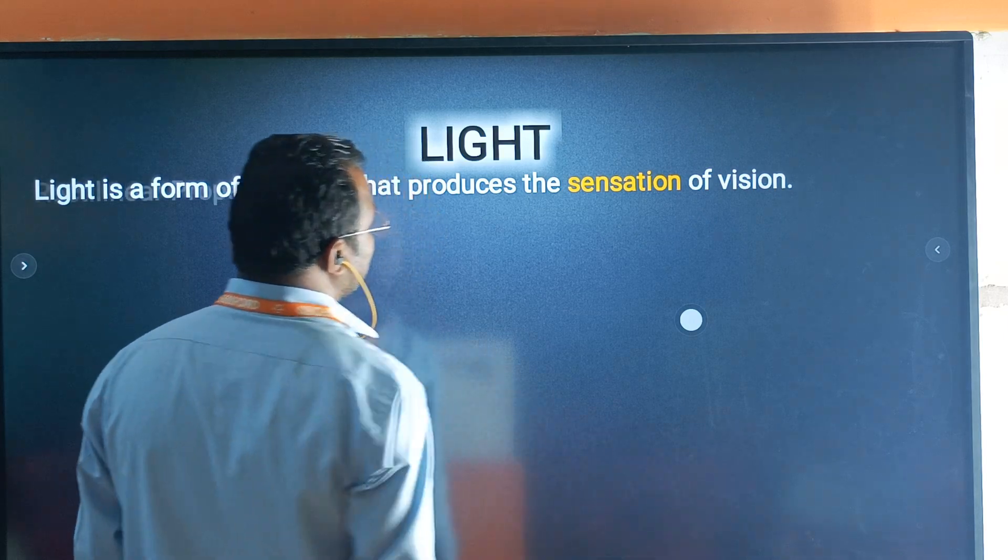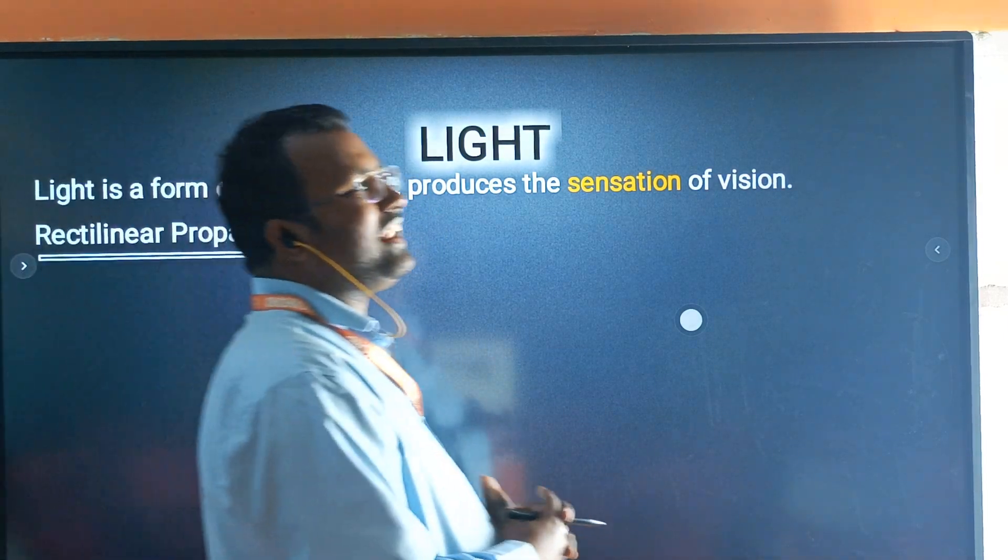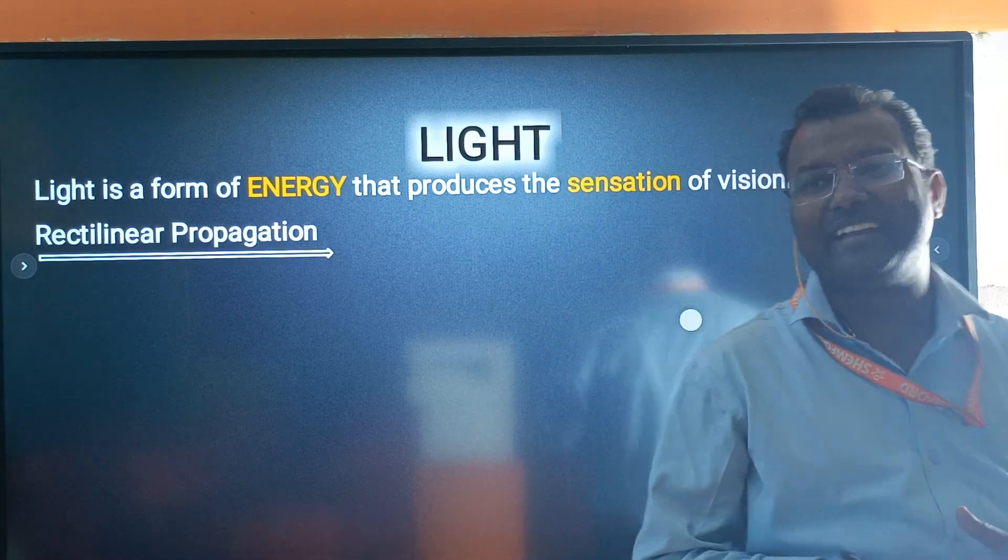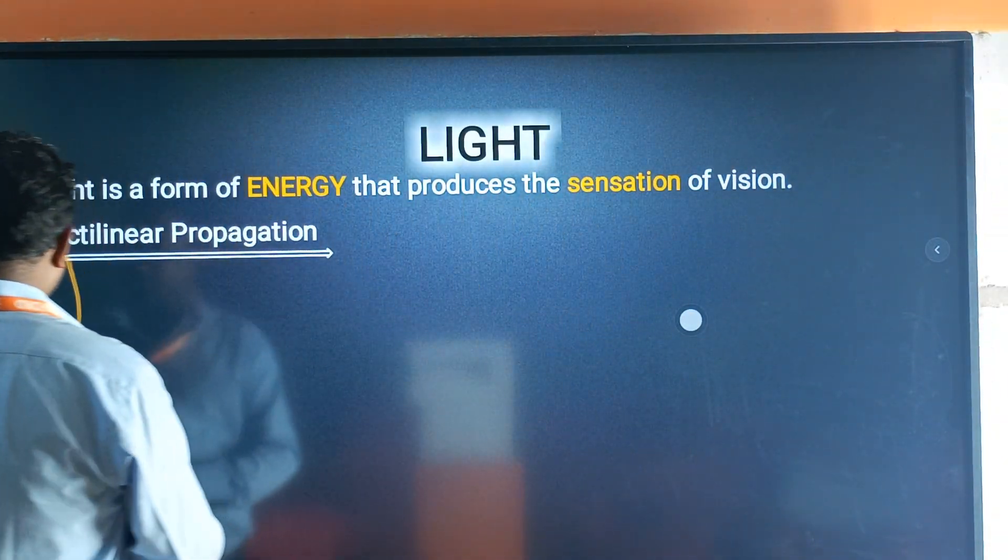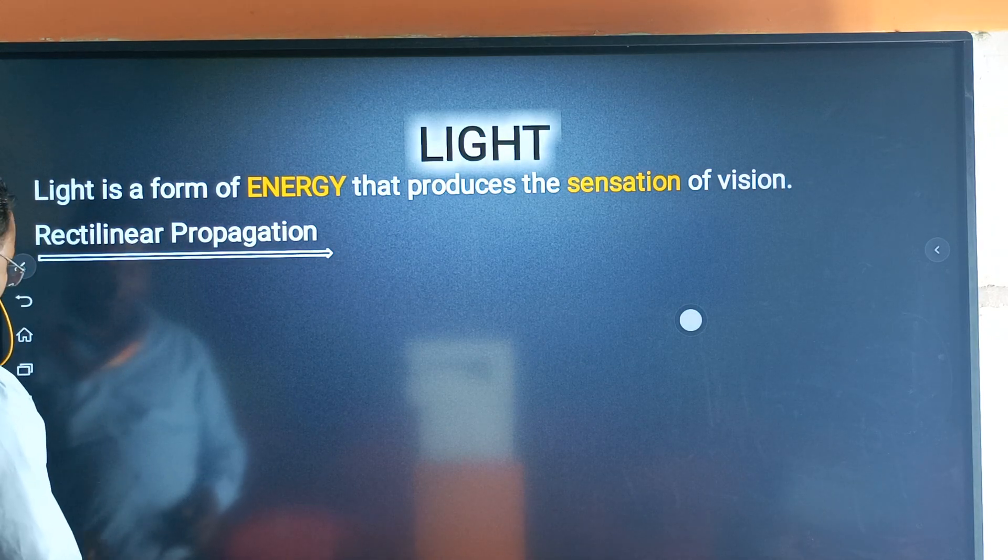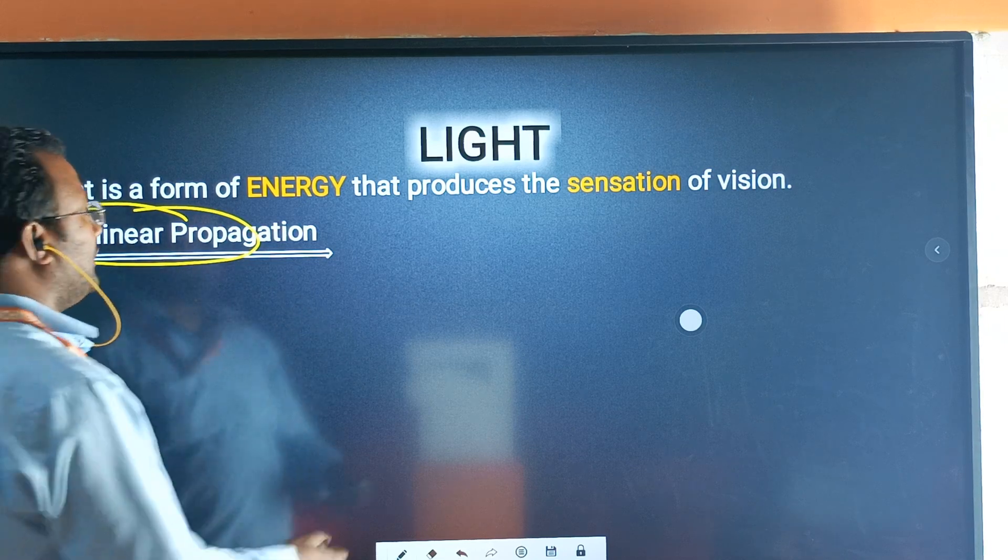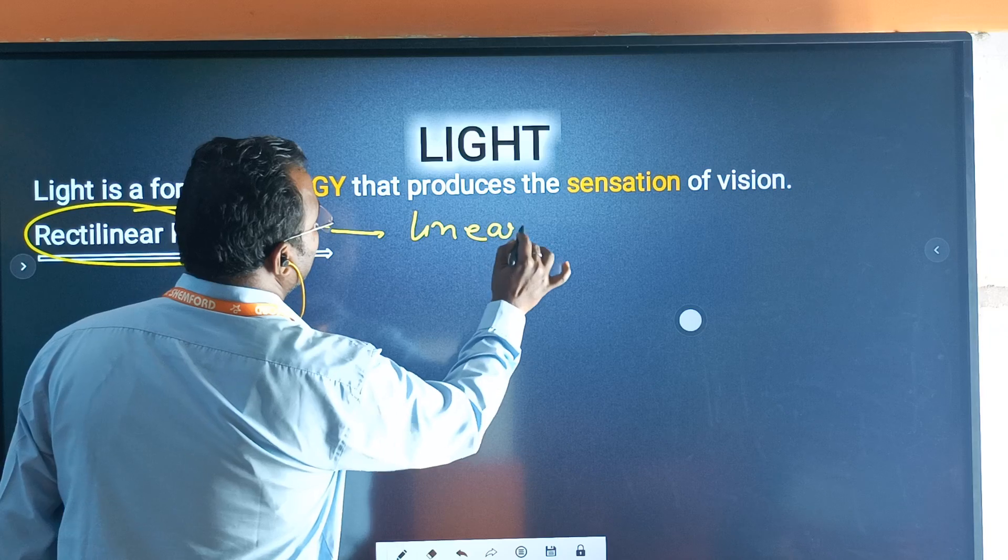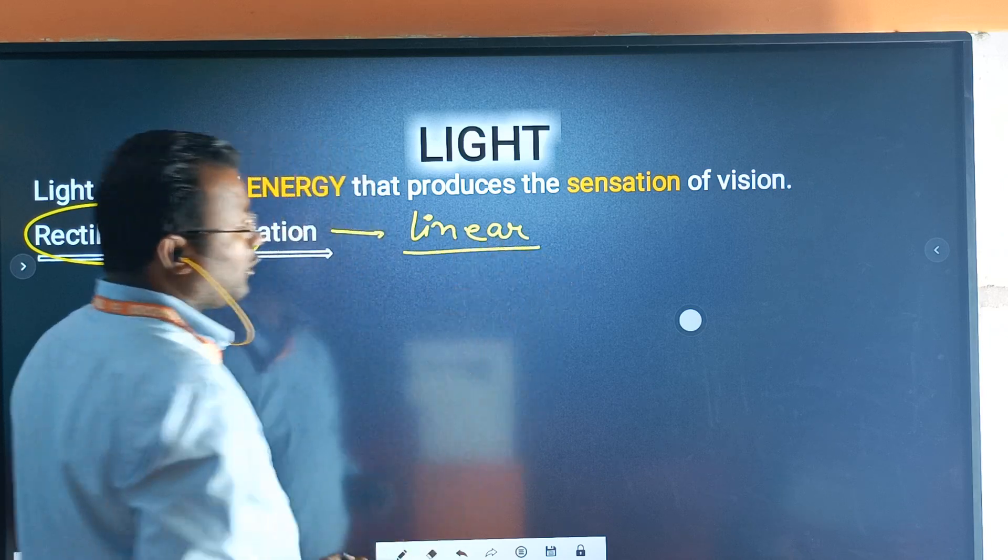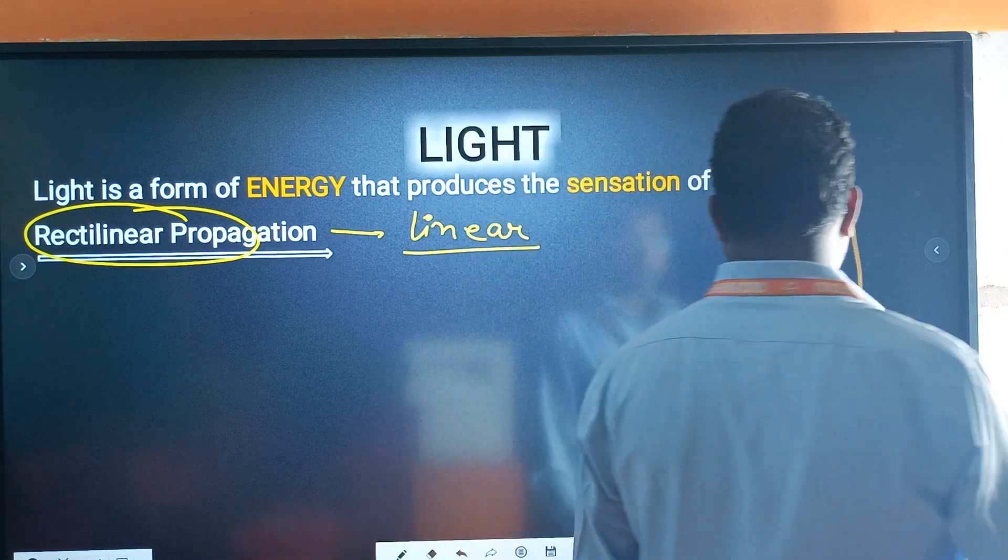Aabhi hum baat karte hain ki light mein kya hota hai. One property light ke hai, that light has rectilinear propagation. Rectilinear means that the light always propagates in one direction. The ray of light always moves in a linear pattern.